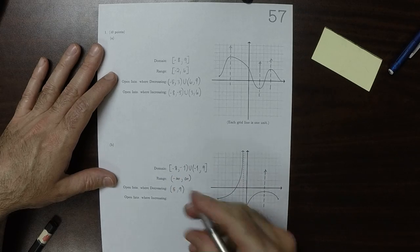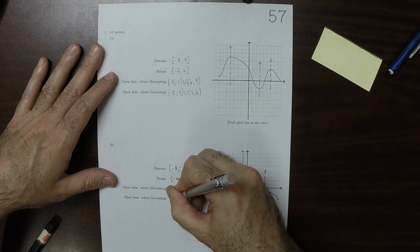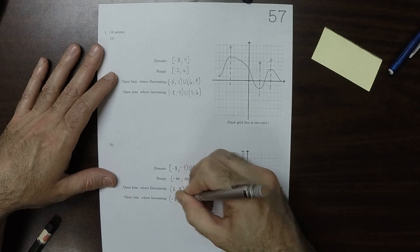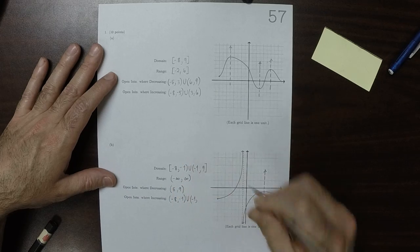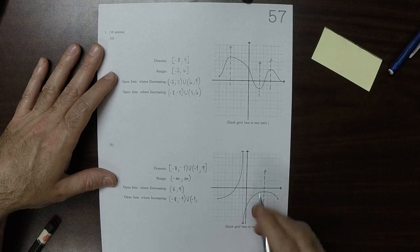And then increasing from negative 8 to negative 1, union negative 1 to 5.